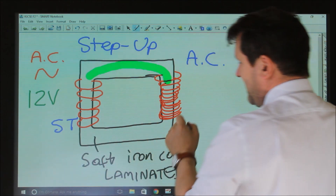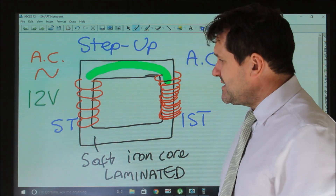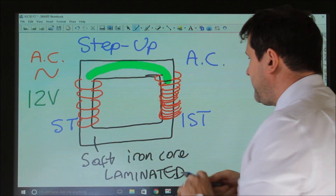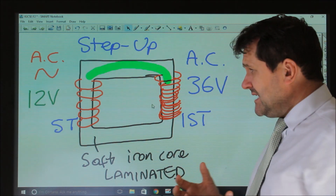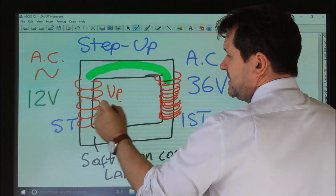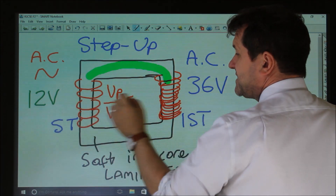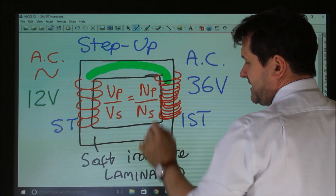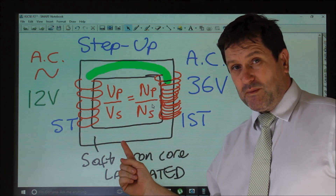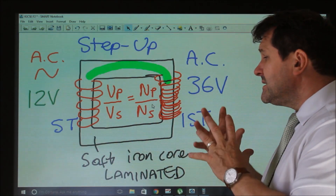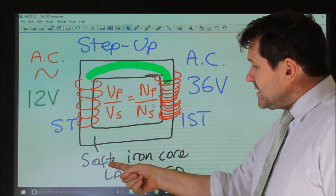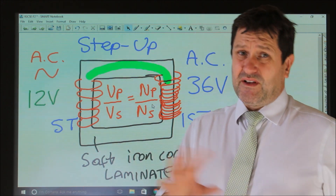Because we have 5 turns on the primary coil and 15 turns on the secondary coil, the ratio of turns determines the ratio of voltages. With 5 turns primary and 15 turns secondary, this is 3 times bigger, so if the input is 12 volts the output would be 36 volts. The formula is: voltage on the primary coil divided by voltage on the secondary coil equals number of turns on the primary coil divided by number of turns on the secondary coil. Soft iron is used because it is easily magnetized and demagnetized, so the magnetic field is easily flipped.